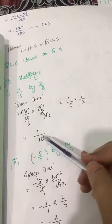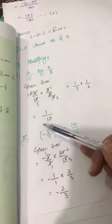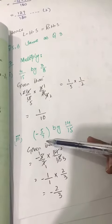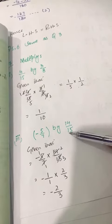Next question, question number 7 part 3: minus 5 by 7 by 14 by 15.